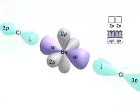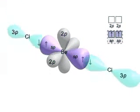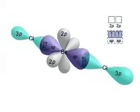In the molecule, beryllium has undergone SP hybridization. The half-filled SP hybrid orbitals overlap the half-filled chlorine orbitals to form two BeCl covalent bonds that are 180 degrees apart.